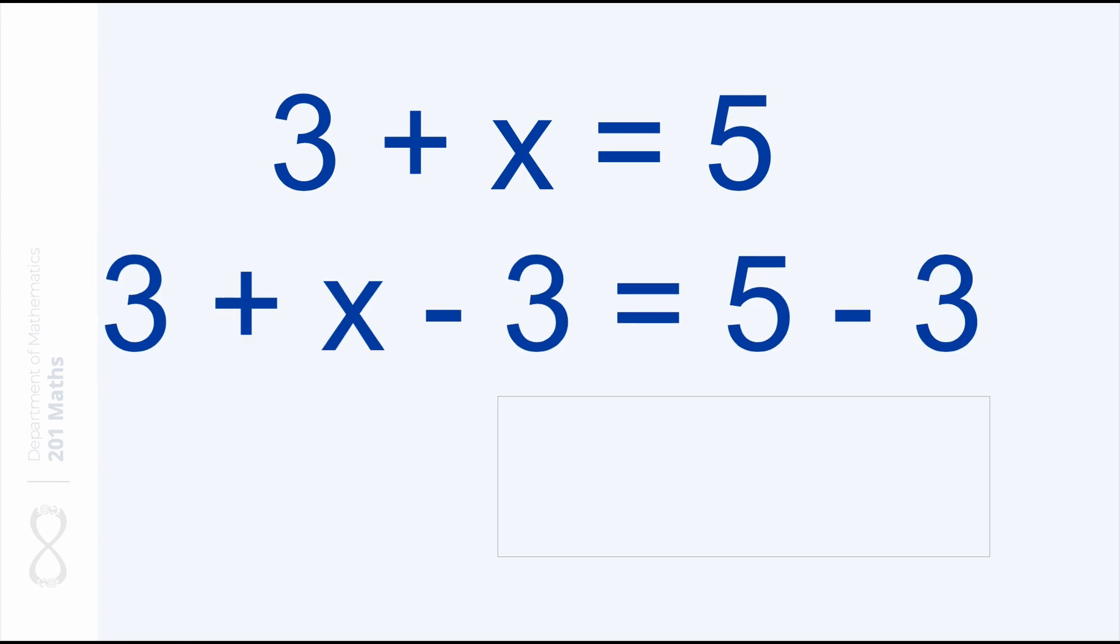All right, so the left side can be simplified into x, and the right side we have 5 minus 3 which is 2. And here we go. Our equation is solved. x equals 2. This is a more rigorous way of finding the value of the variable. You can solve any similar equation by doing this.